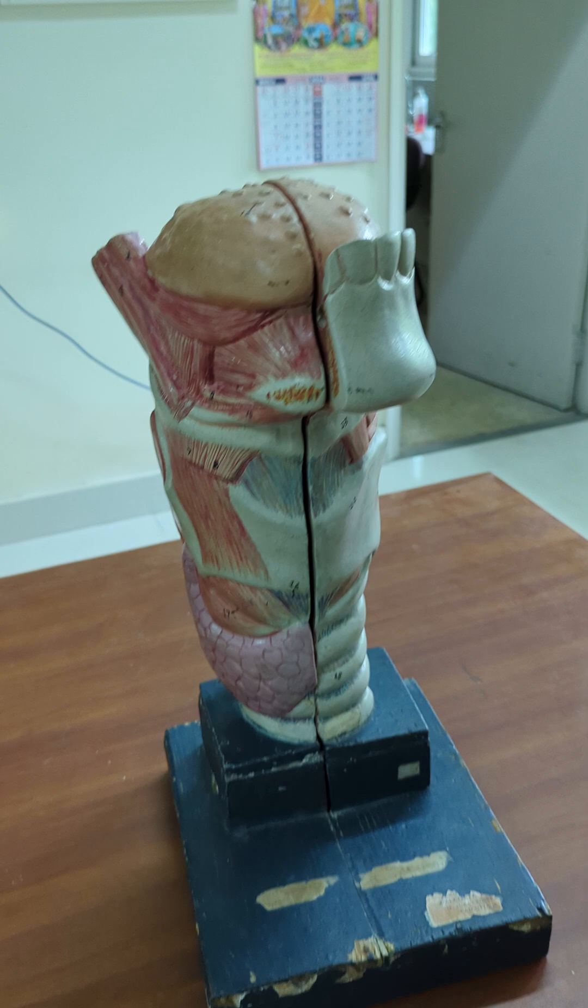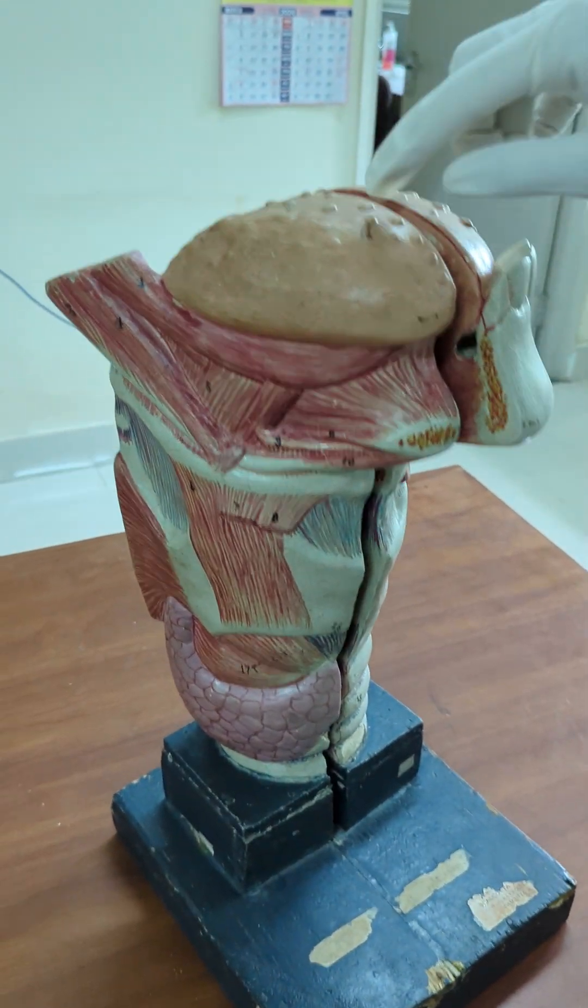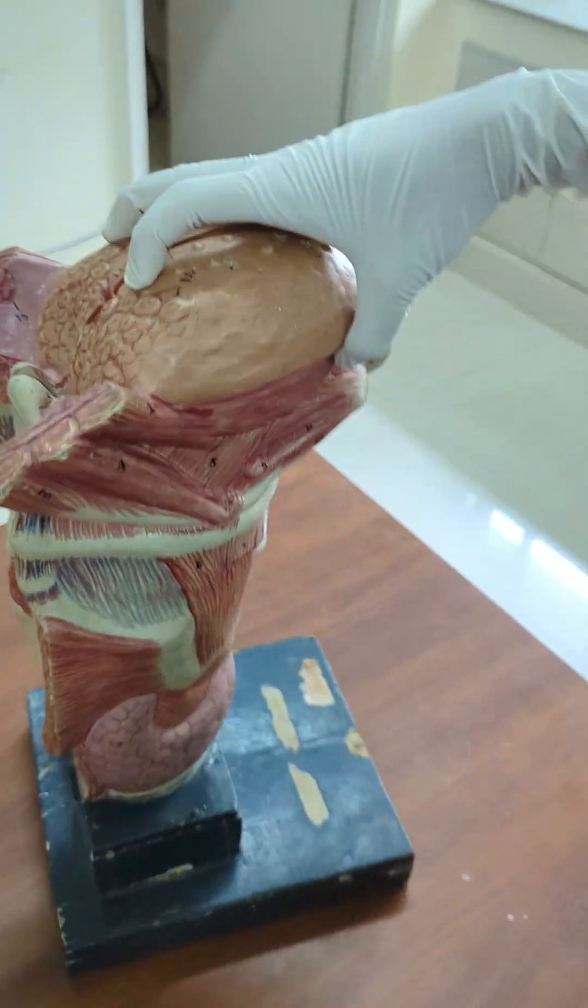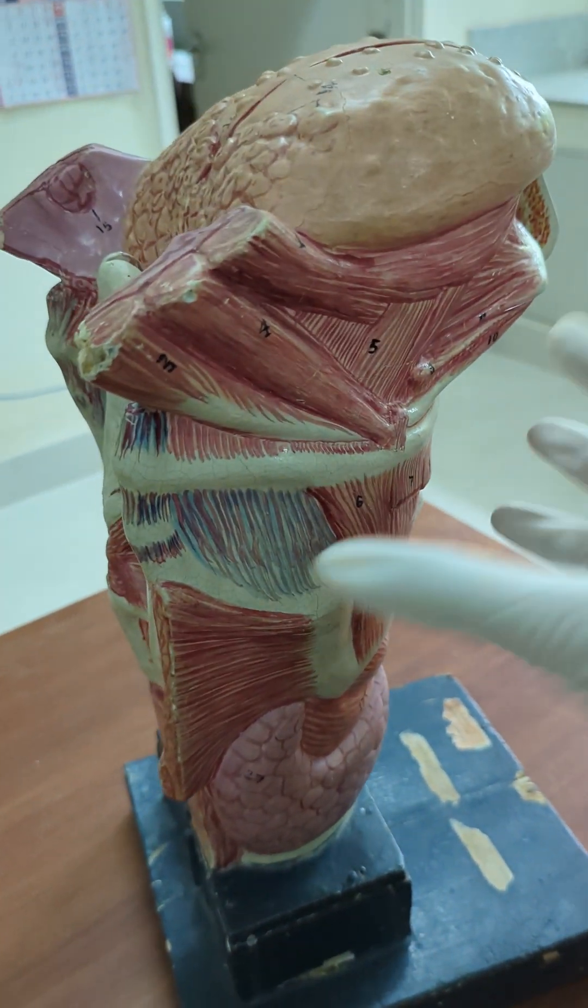This is a very old model of larynx. As you can see the tongue and the papillae, dot dot papillae here, and this is the thyroid gland, these are the muscles below the tongue.